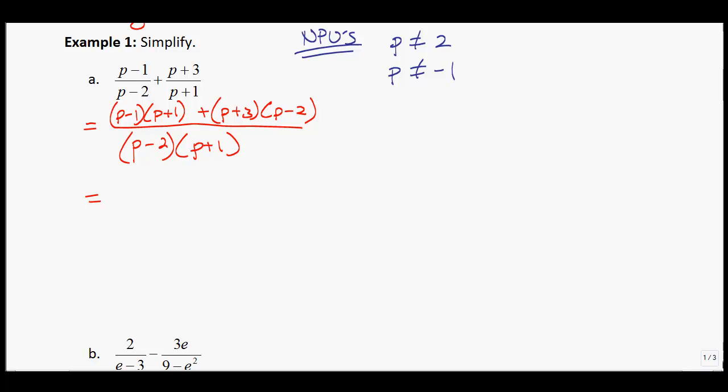Now I'm going to distribute out the numerators and gather my like terms. p times p gives me p squared. Noticing this is a difference of squares, the middle p's will cancel out. Negative 1 times positive 1 is negative 1, plus p squared. p times negative 2 is negative 2p, and then 3p gives you positive 1p. 3 times negative 2 is negative 6.